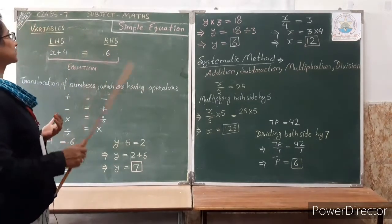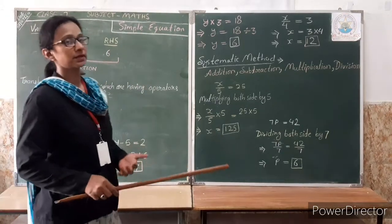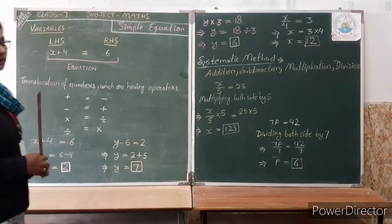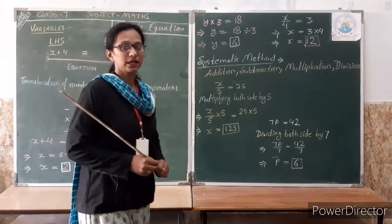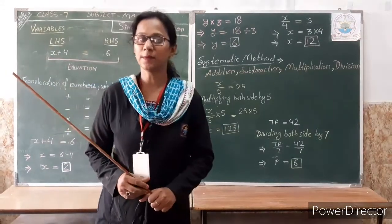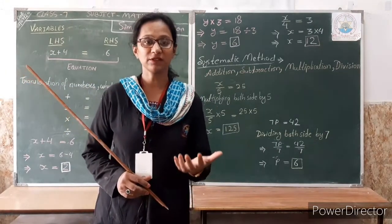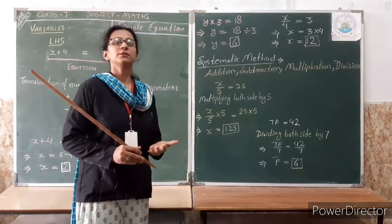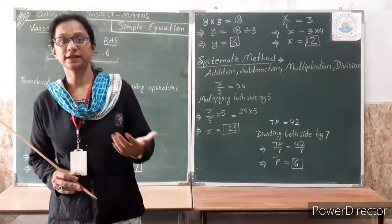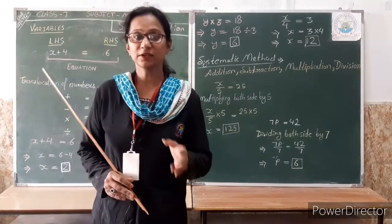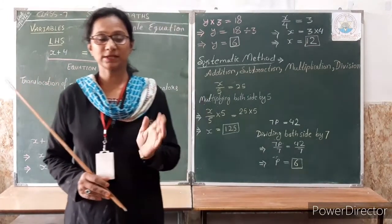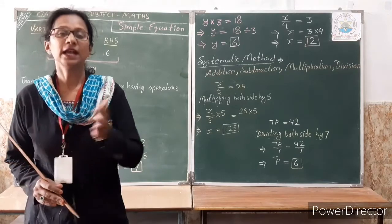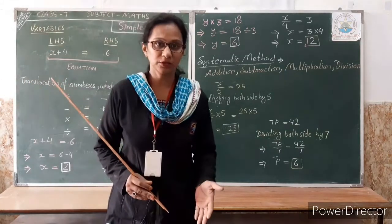When we talk about simple equations, we talk about variables. What are variables? Variables are terms which contain multiple values. A variable is a term which can hold many values. This means at one time it has one value, but at a second time you can change the value. It does not contain the same fixed value — it can contain different values.